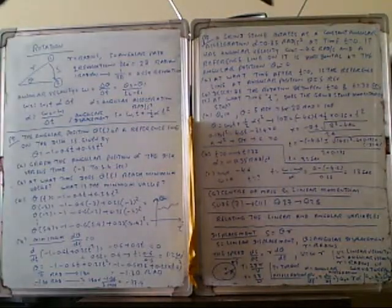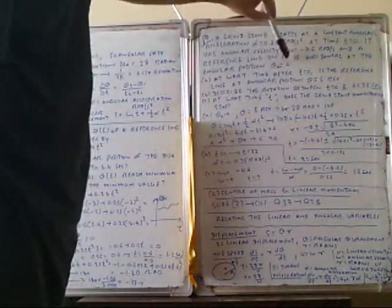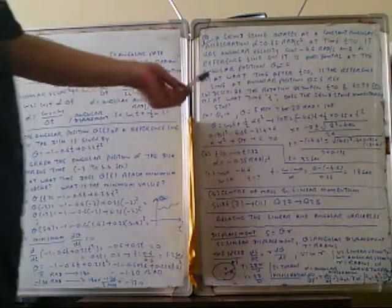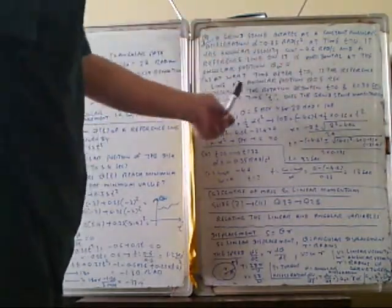In this problem, a grindstone is loaded at constant angular acceleration alpha equal to 0.35 radian per second squared. At time t equals zero, it has angular velocity omega zero equal to minus 4.6 radian per second, and a reference line on it is at angular position theta zero equal to zero. Part A: at what time after t equals zero is the reference line at angular position theta equal to five revolutions?